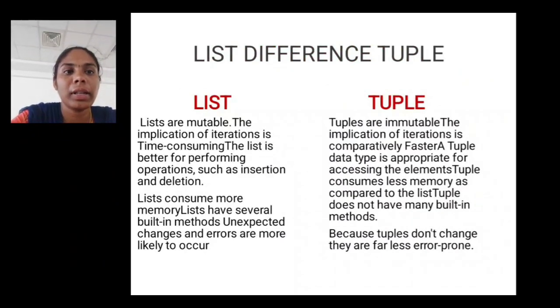List difference from tuple. List and tuple. Lists are mutable. Tuples are immutable. The implication of iteration is time-consuming. Lists are better for performing operations such as insertion and deletion. The implication of iteration is comprehensively faster. A tuple data type is appropriate for accessing the elements. Tuples consume less memory as compared to the list. Tuples do not have many built-in methods. Lists consume more memory. Lists have several built-in methods. Unexpected changes and errors are more likely to occur because a tuple does not change, whereas lists are error-prone.